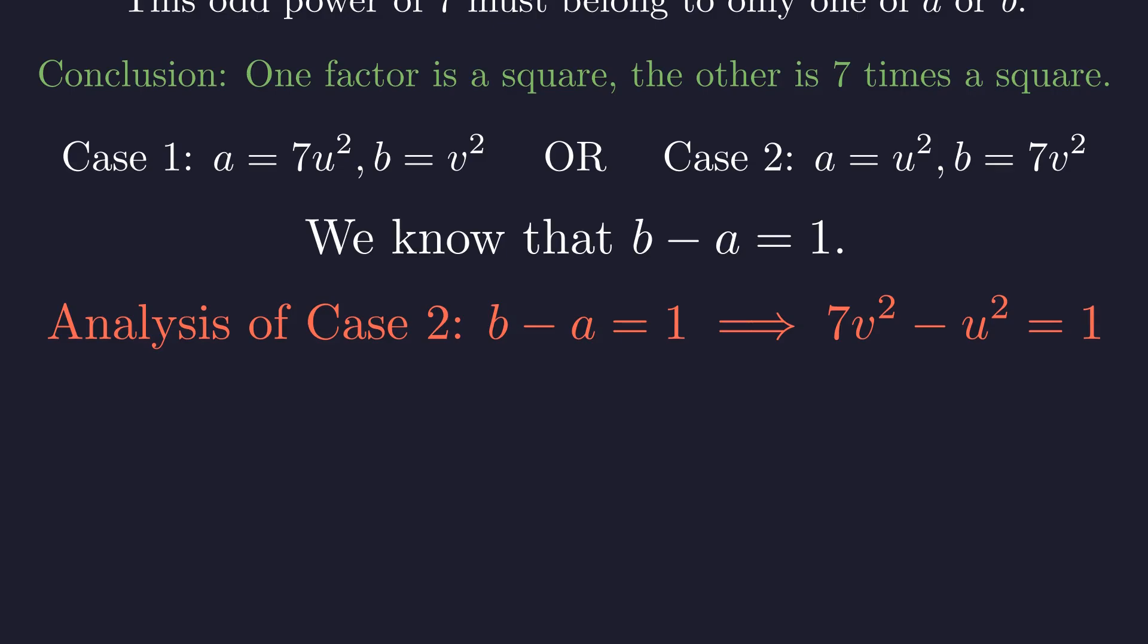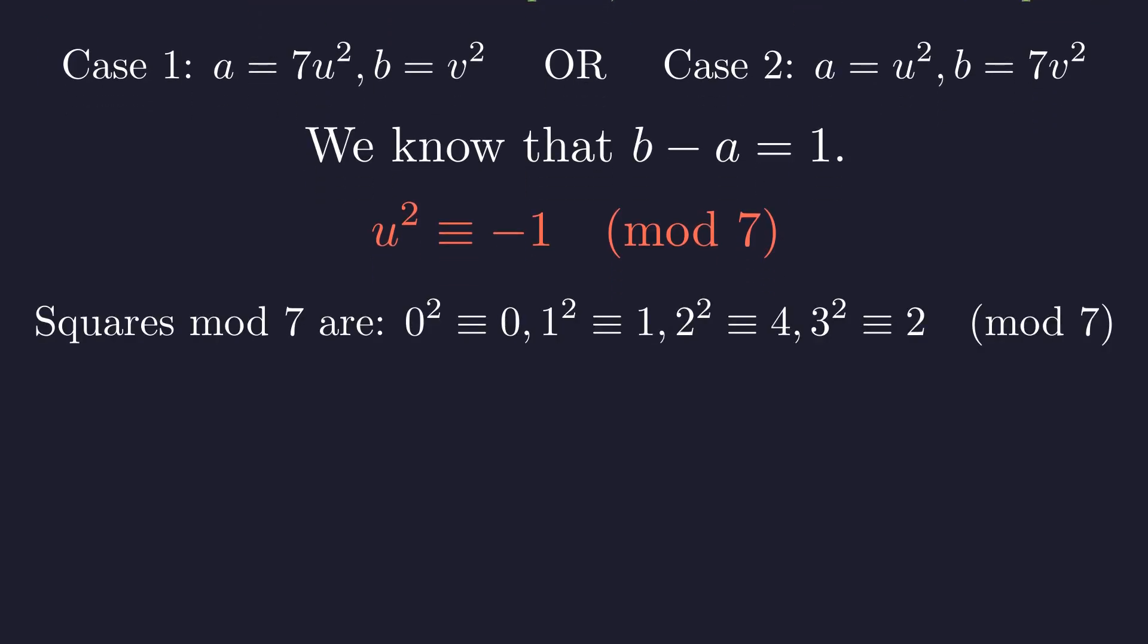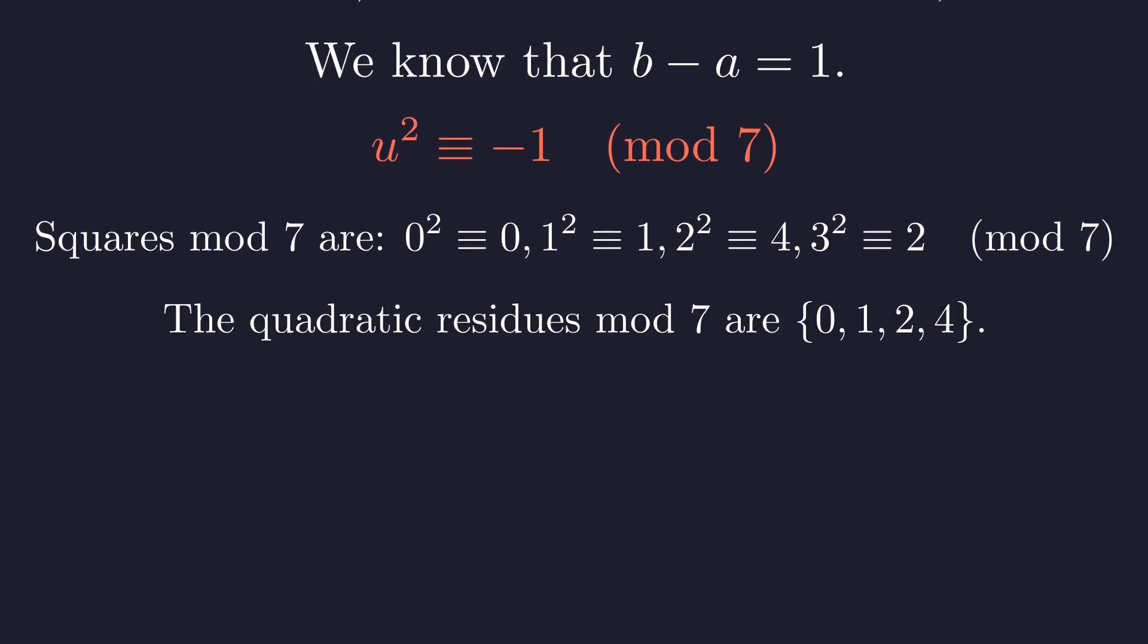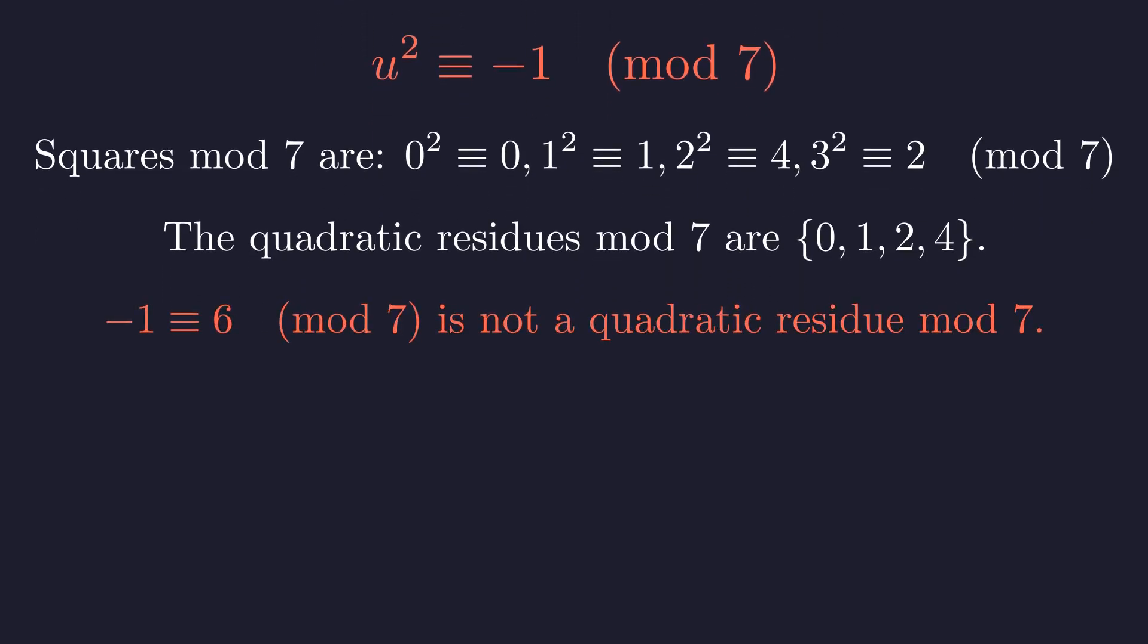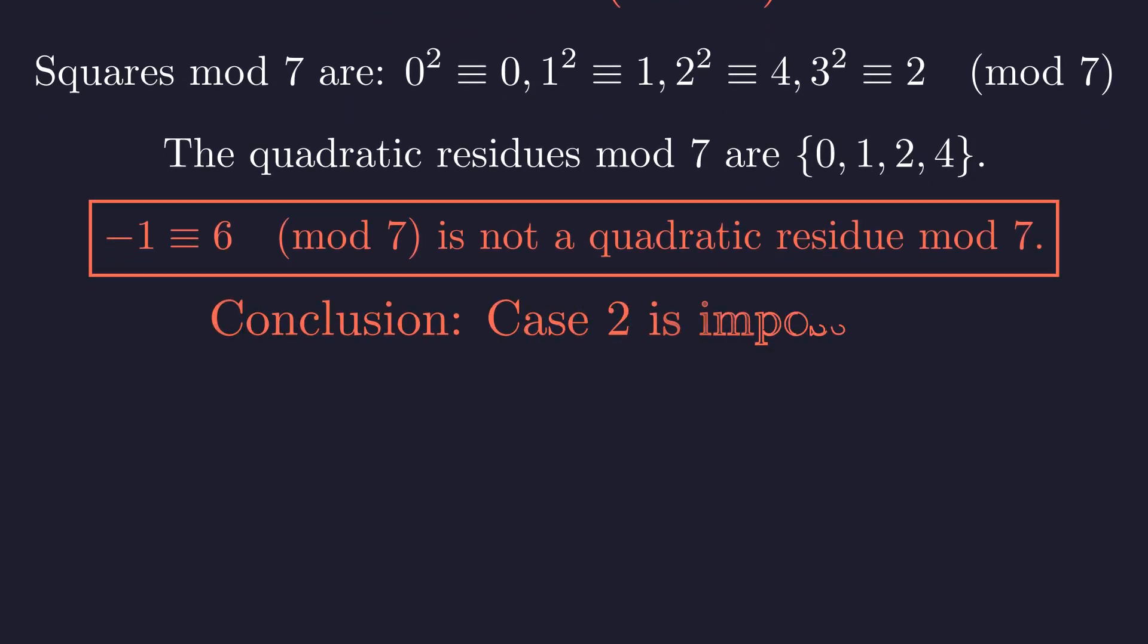Let's examine Case 2. Substituting into the difference equation gives 7v² minus u² equals 1. To rewrite this in a standard Pell's form, we multiply by negative 1. This gives u² minus 7v² equals negative 1. We can test the solvability using modular arithmetic, specifically considering it modulo 7. The equation reduces to u² is congruent to negative 1 modulo 7. The set of quadratic residues modulo 7 is 0, 1, 2, and 4. Negative 1 is congruent to 6 modulo 7, which is not in the set of quadratic residues. Consequently, this equation has no integer solutions.